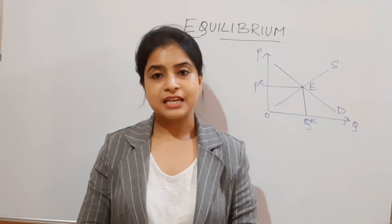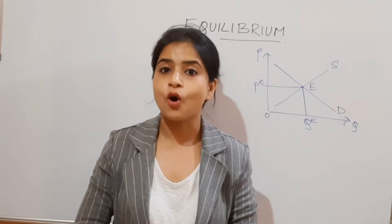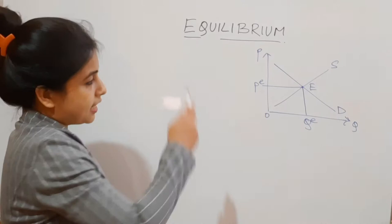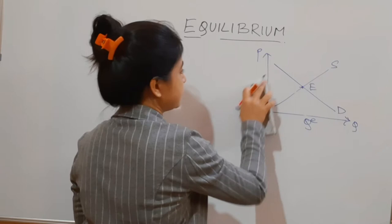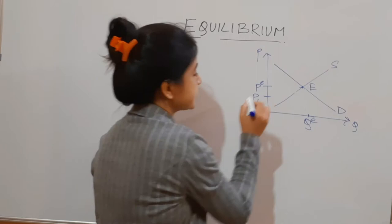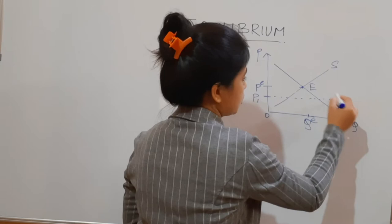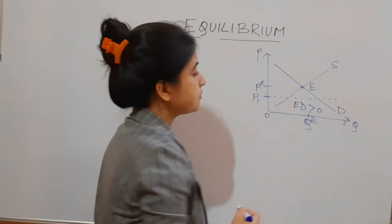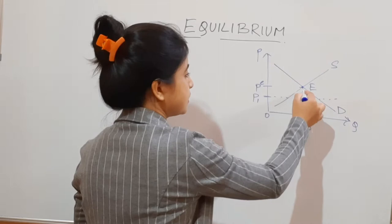The basic concept of equilibrium is related to its stable or destabilized form. Looking at the diagram, I'm marking the equilibrium price and quantity as Pe and Qe. Now if we have a price P1 below equilibrium and draw a dotted line, this is a case where demand is more than supply — there is excess demand.